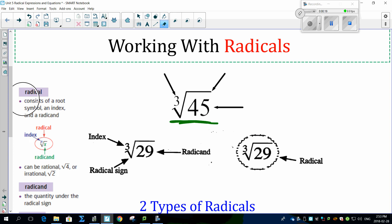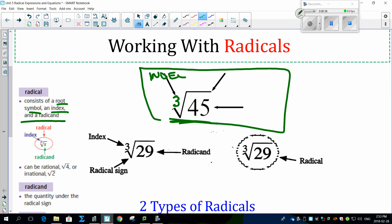If you read this definition, it says a radical consists of a root symbol, an index, and something called the radicand. Here's the entire radical. This number here, this three, means you're taking the cube root of something. That is actually called the index.